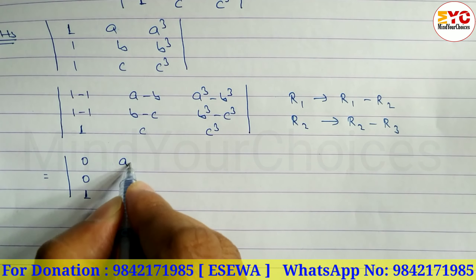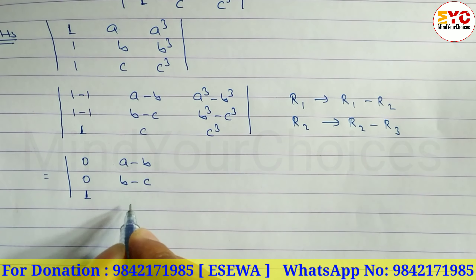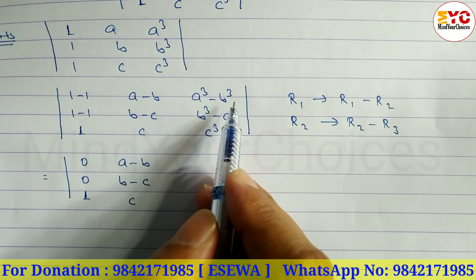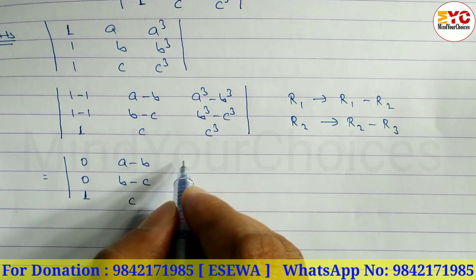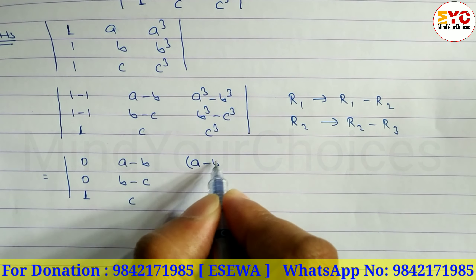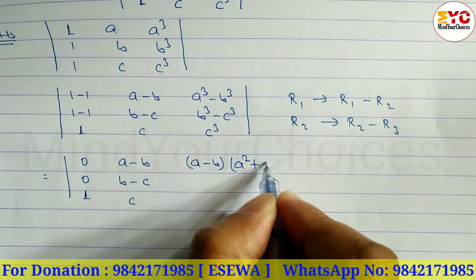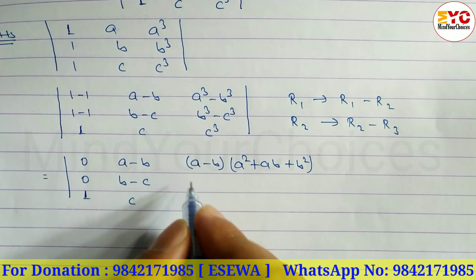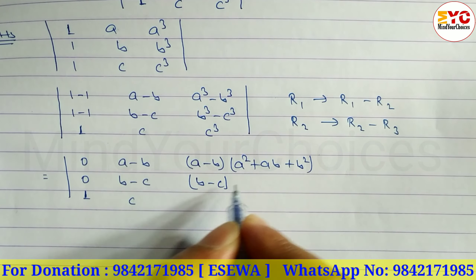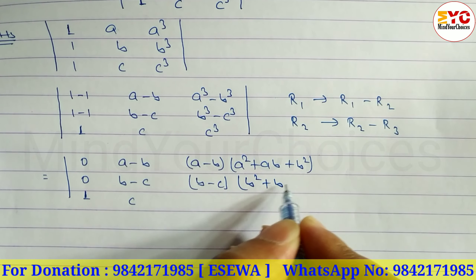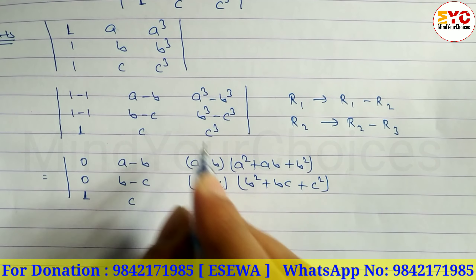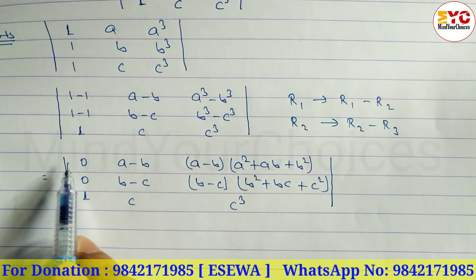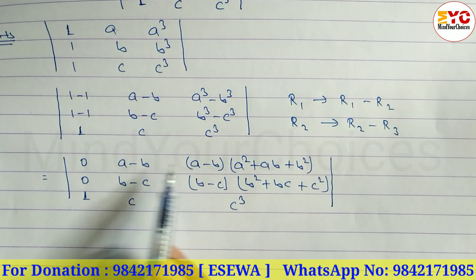For a³ - b³, use the formula: (a-b)(a² + ab + b²). Similarly, b³ - c³ = (b-c)(b² + bc + c²). Write down c³ for the third row. So the second row now has (a-b) as a factor and the first row has (b-c) as a factor.